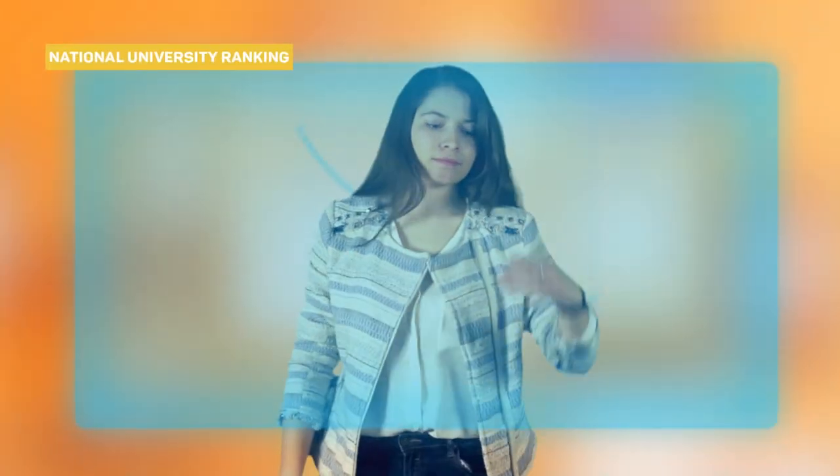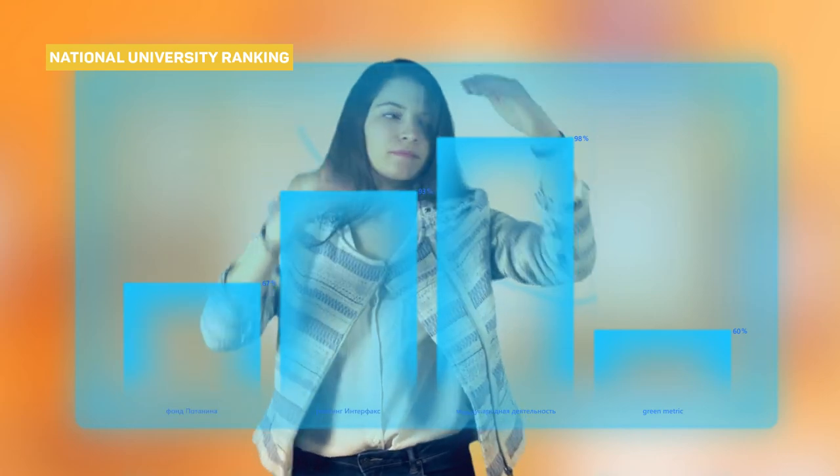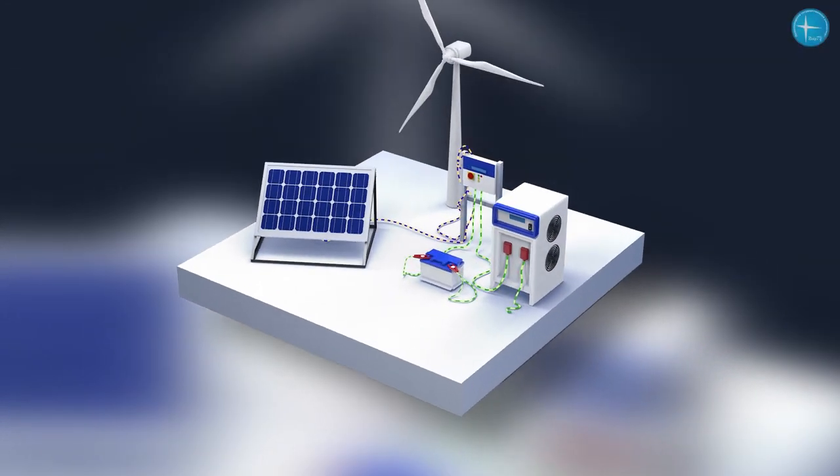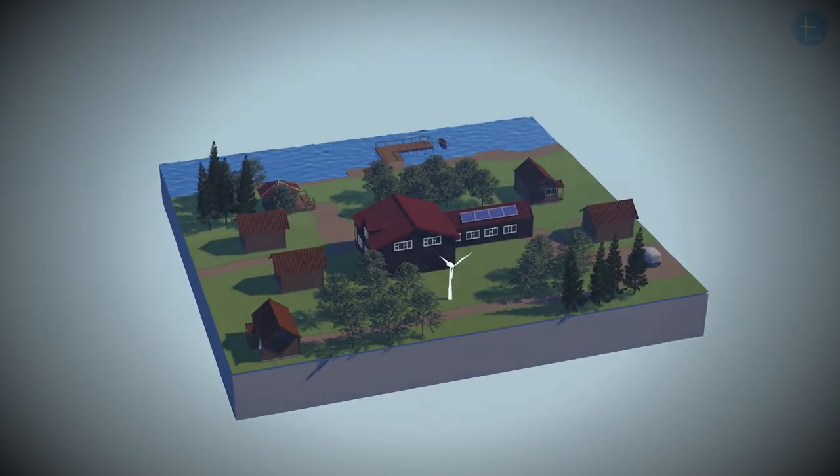Petrozavodsk State University is in QS university rankings, is in the top ten Russian universities included in green metric ranking, and takes the fifth position in the northwest of Russia according to the national university ranking.